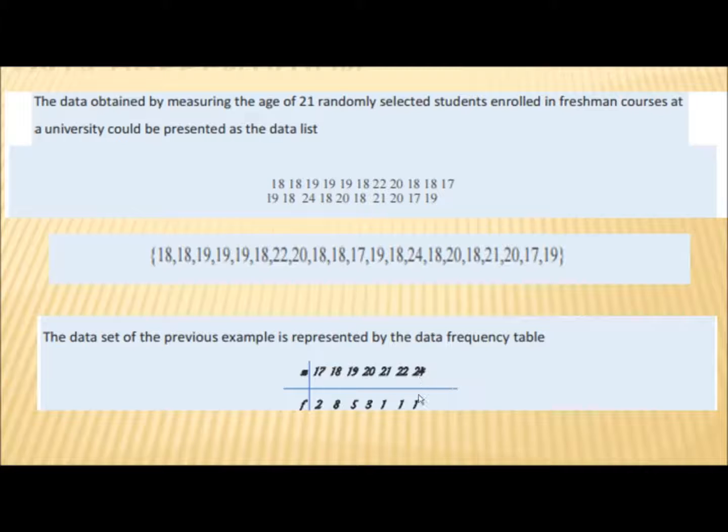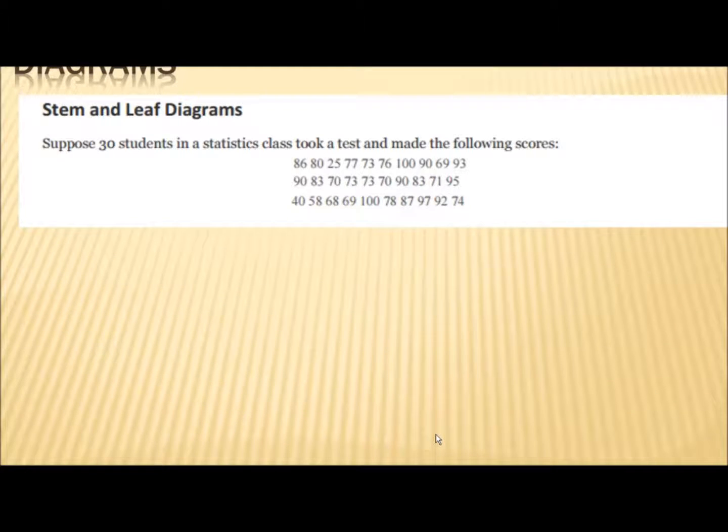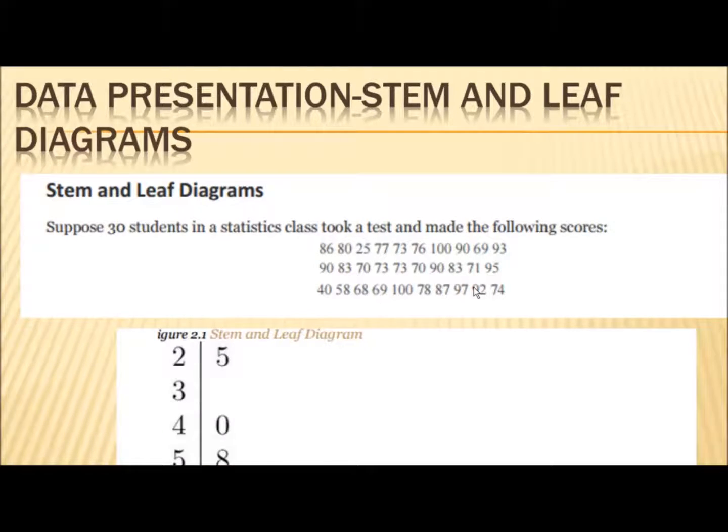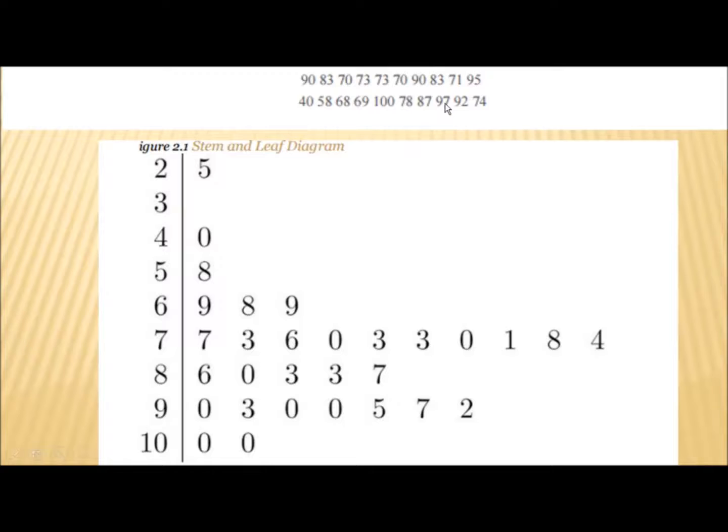Here's another way of presenting called the stem and leaf diagram. Let's say 30 students in a statistics class took a test and made the following scores. When you go from 21 to 30, it immediately becomes really big and unwieldy. How do you represent this well? You can represent this as what is called a stem and leaf diagram.